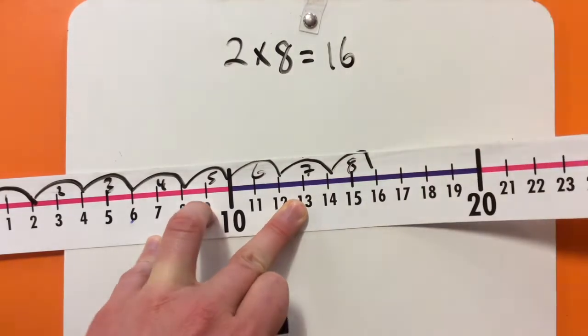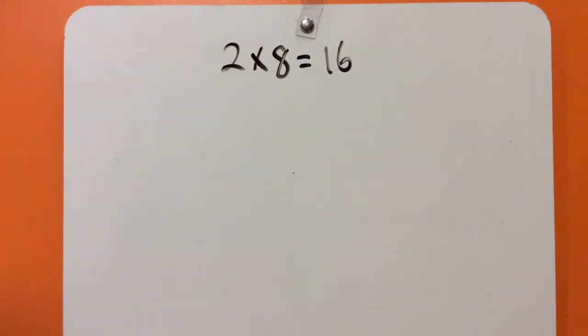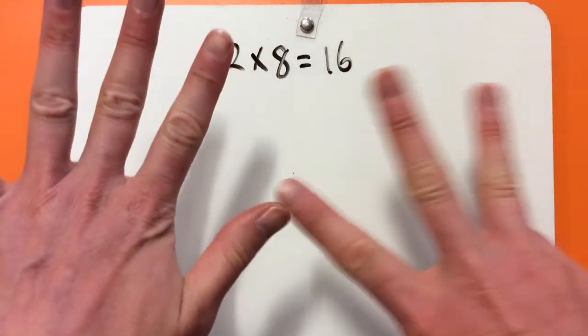So, 2 times 8 is 16. Let's double check that with both the abacus and our fingers. Let's start with fingers first. So, 8 fingers.